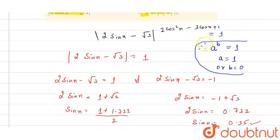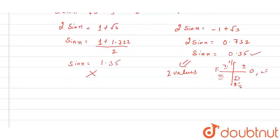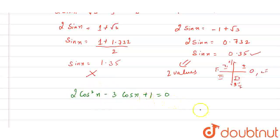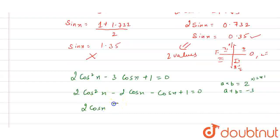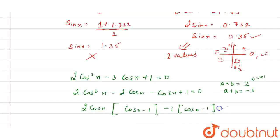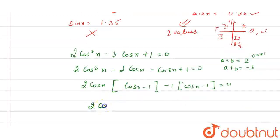The second condition is b equals 0. So we get: 2 cos²x minus 3 cos x plus 1 equals 0. This is quadratic in cos x. We need two factors that multiply to give 2 and add to give minus 3. The factors are 2 and 1, giving us: 2 cos²x minus 2 cos x minus cos x plus 1 equals 0. Taking 2 cos x common and then minus 1 common, we get the two factors: (2 cos x minus 1) equals 0 and (cos x minus 1) equals 0.